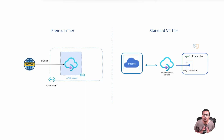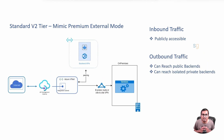This is in a way similar to VNet integration in an app service plan. That being said, API management is still publicly accessible. To understand this better: can we mimic this as Premium VNet external mode? The short answer is yes. Standard V2 allows you to integrate with a virtual network, which can be a privately isolated VNet.